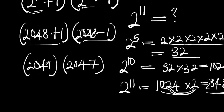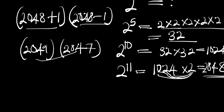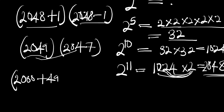Now how are you going to multiply 2049 by 2047? There is a trick. We can rewrite 2049 as 2000 plus 49, and 2047 as 2000 plus 47.